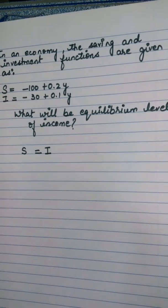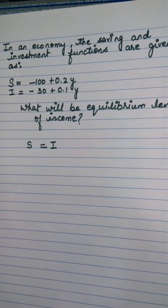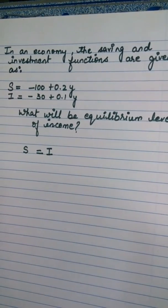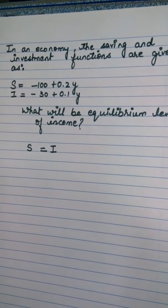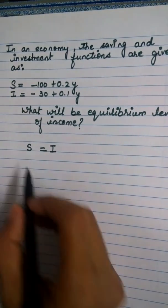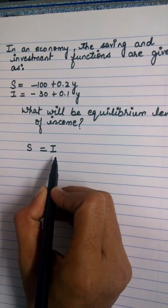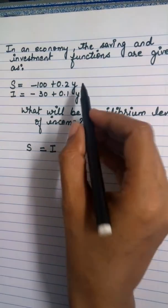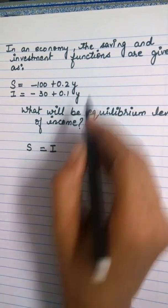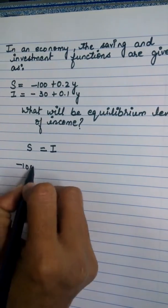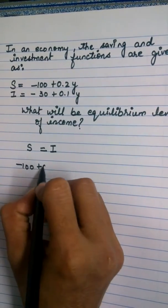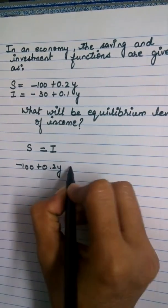This is one of the easiest questions asked in economics. This question belongs to macroeconomics from the IS-LM curve chapter. So saving equals investment. If we equate these equations: negative 100 plus 0.2Y equals negative 30 plus 0.1Y.